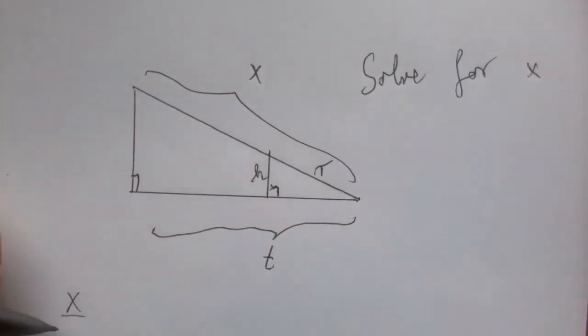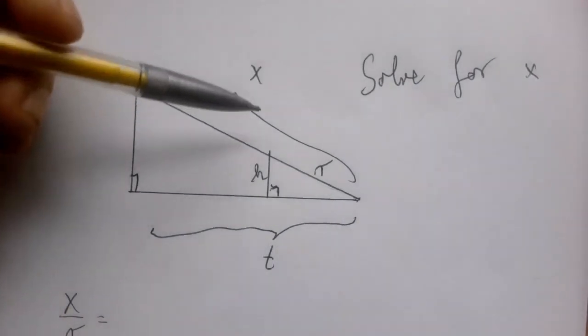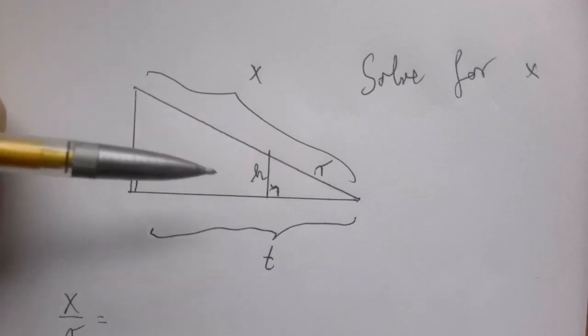So we can say hypotenuse in the big one divided by hypotenuse in the small one. But then, in the big triangle, the horizontal side is given. In the small triangle, the vertical side is given. That's not good.